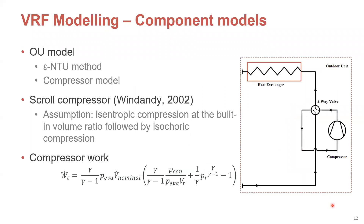For the outdoor unit model, it consists of two components: the heat exchanger and the compressor. The heat exchanger model is the same as for the indoor unit. For the compressor model, we consider a scroll compressor where mechanical work is the result of two successive processes: first, an isentropic compression to the compressor's built-in volume ratio, followed by an isochoric compression to the discharge pressure. The total compressor work is evaluated by the corresponding equation.